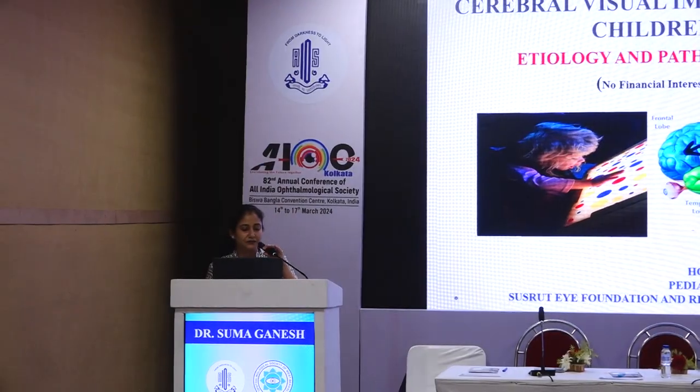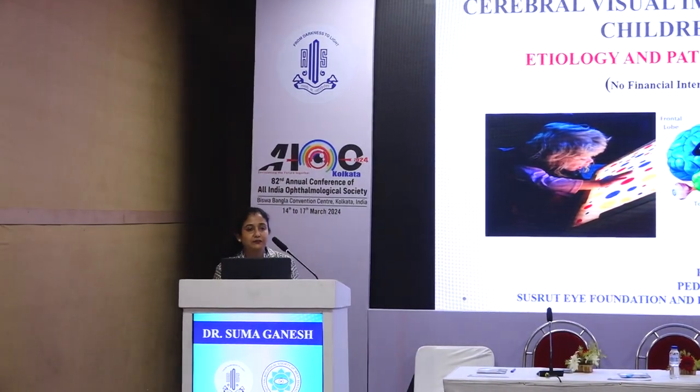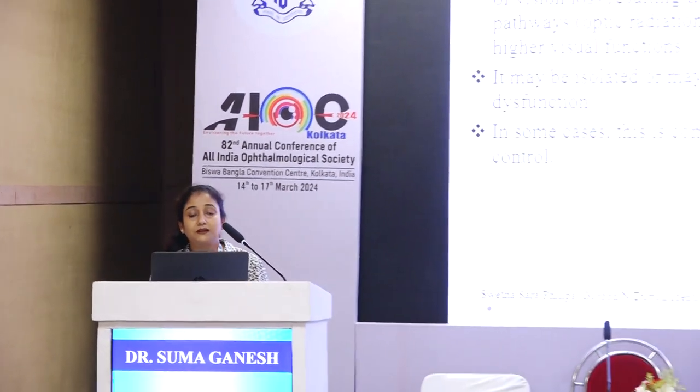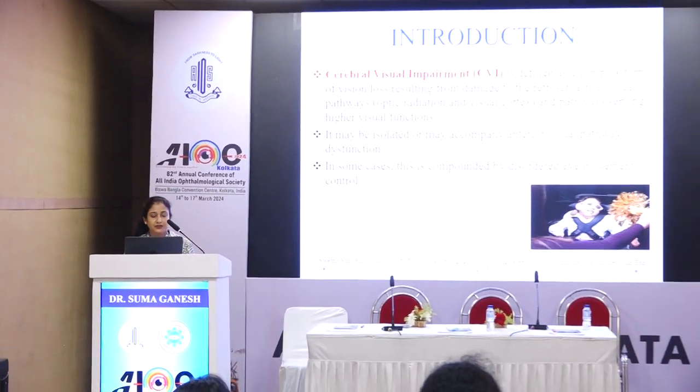Thank you for making me part of this instructional course. Cerebral visual impairment is defined as a complex form of vision loss resulting from damage to the retrochiasmal visual pathways, which includes the optic radiation and visual cortex and pathways serving higher visual functions. It may be isolated or may accompany anterior visual pathway dysfunction, and in some cases is compounded by disordered eye movement control.